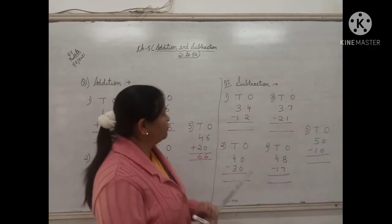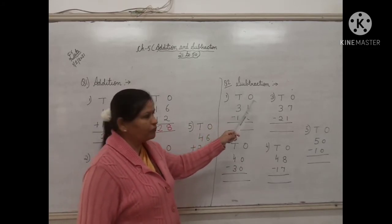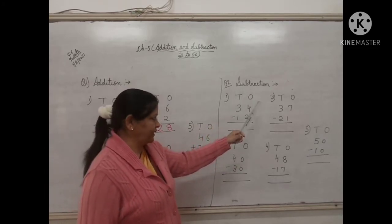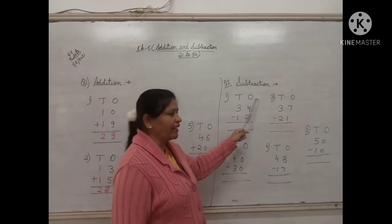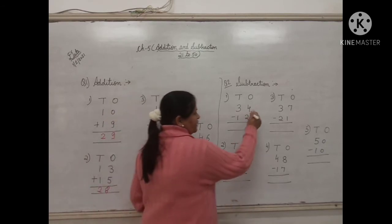Now we come to question number 2, that is subtraction. Children, in subtraction also we will start from the ones digit. So in the ones digit, the number is 4 minus 2. So, how will you subtract?